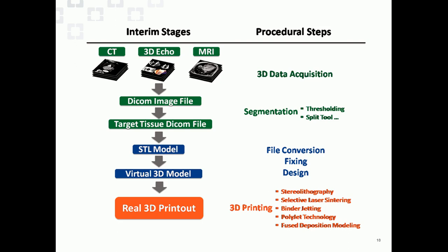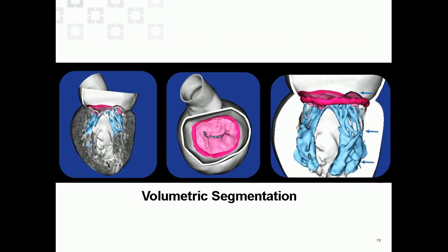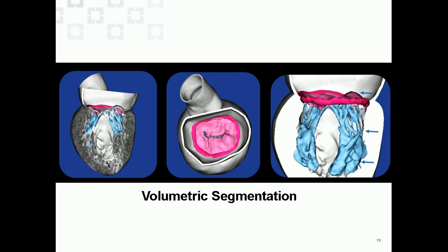The first step is to take the DICOM image file and convert it to a stereolithographic model. The file is then converted, adjusted, and smoothed out — with some minor loss of fine detail. It's then printed using a variety of techniques including stereolithography, which is standard layer-by-layer 3D printing; laser sintering, which uses a laser to heat powder and create material; polyjet technology using softer plastic material; as well as binder jetting and fused deposition. You then segment out the valve itself, the valve annulus, the leaflets, and the subvalvular apparatus, and print it out.